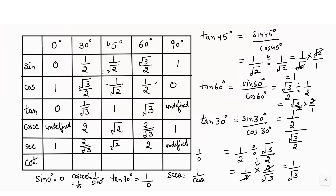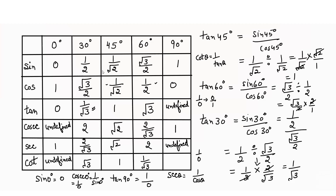The cotangent value: cot theta is the reciprocal of tan theta. The reciprocal of 0 is undefined, so cot 0° = undefined. Cot 30° = √3, cot 45° = 1, cot 60° = 1/√3, and cot 90°: the reciprocal of undefined (which is 1/0) gives us 0/1 = 0.